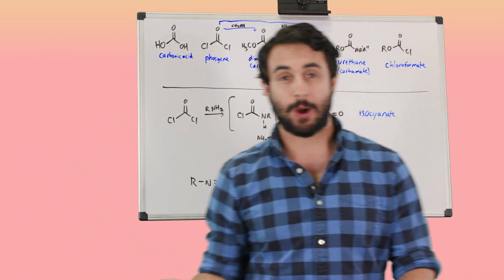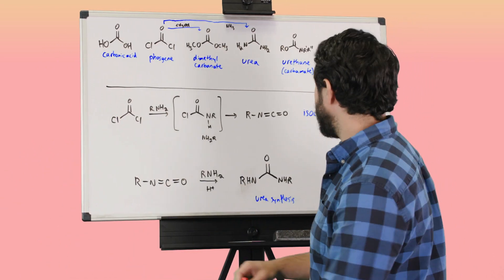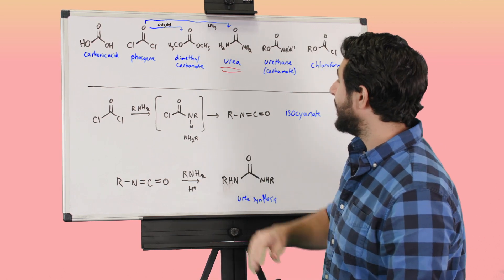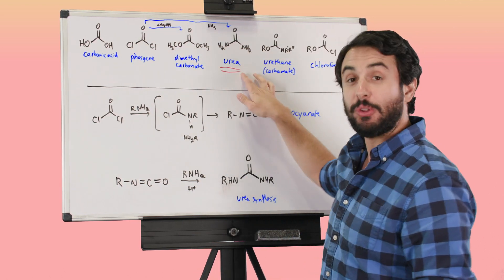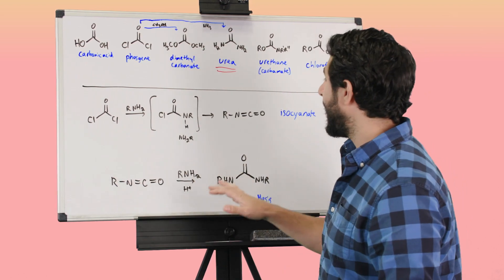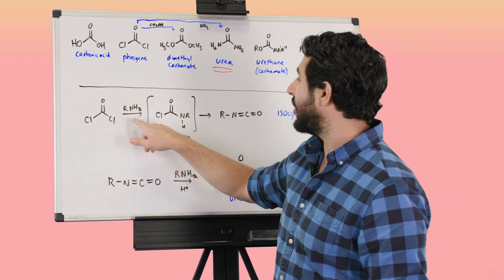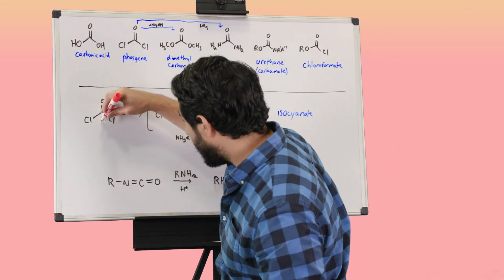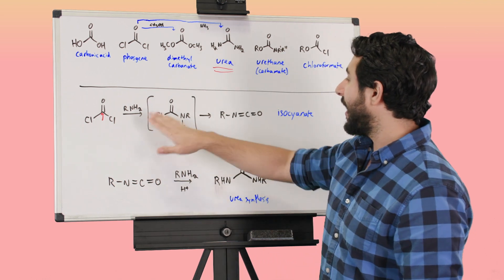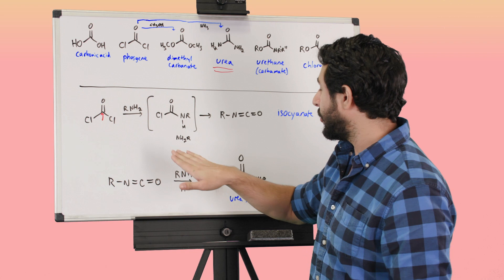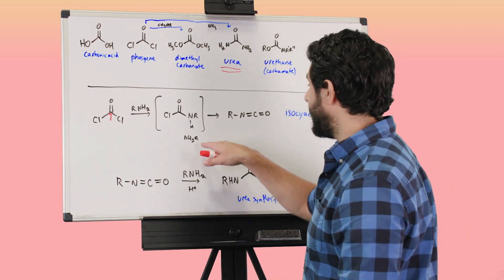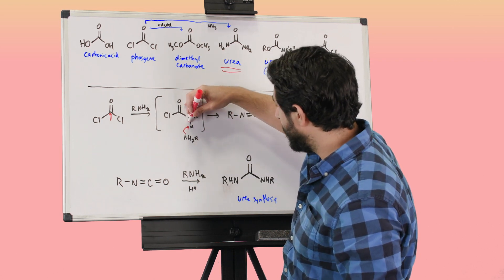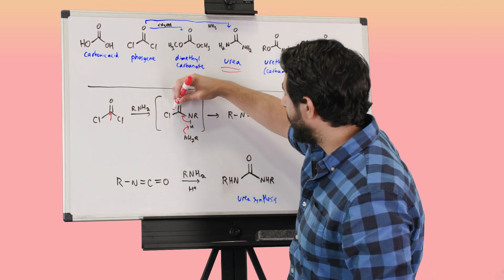So those are your derivatives of carbonic acid, and they have a lot of different utilities. Let's look at urea synthesis — we want to know how to make ureas. We can go from phosgene to a urea. If we've got phosgene and we react it with a primary amine, we know that amine is going to be able to attack the carbonyl carbon. The amine displaces one of those chlorines, and then taking another equivalent of the amine, it grabs this proton.